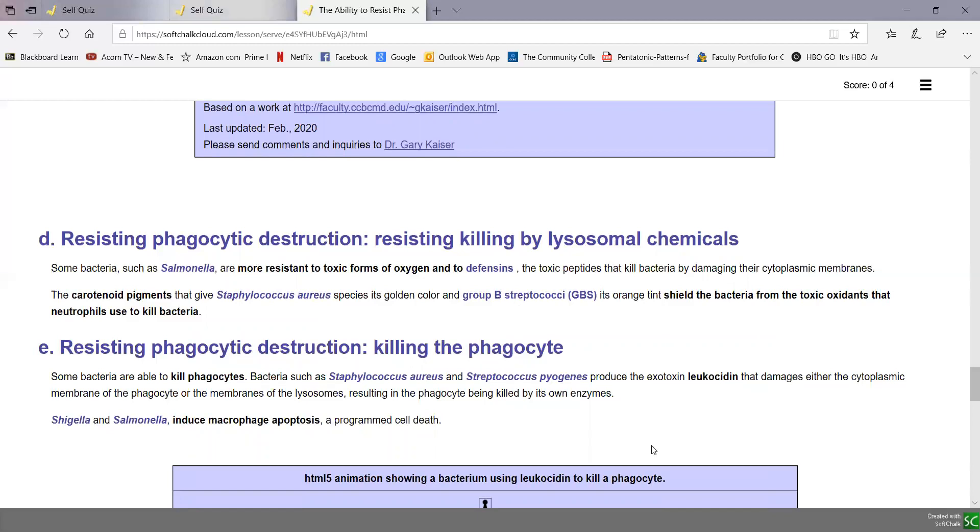A fourth way bacteria can resist phagocytic destruction is some are more resistant to killing by the lysosomal chemicals themselves. Salmonella is more resistant to the toxic forms of oxygen that we use to kill microorganisms. They're also more resistant to the antibacterial peptides that defend us.